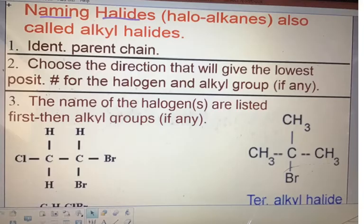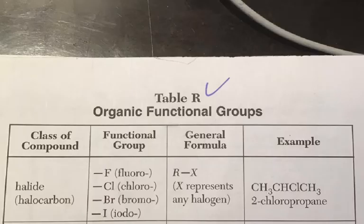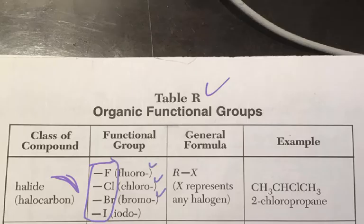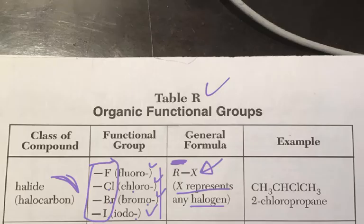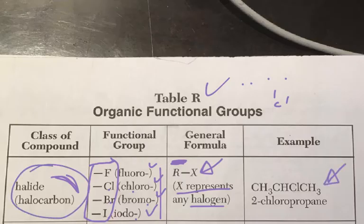So halides — how do you recognize them? The good thing is they're on table R. Halides, or halocarbons, or alkyl halides, always are going to have the guys from group 17 in them. They actually gave you here the prefixes for how to name them: F is fluoro, Cl will be chloro, Br will be bromo, I will be iodo, and so on. Their general formula — R represents some number of carbons, and X will be the halogen. So anytime you have a number of carbons with a halogen attached to it, that's an example of a halocarbon or a halide. In the naming of these guys, they will always have an -ane ending, just like naming alkanes, but with a halide functional group on it.